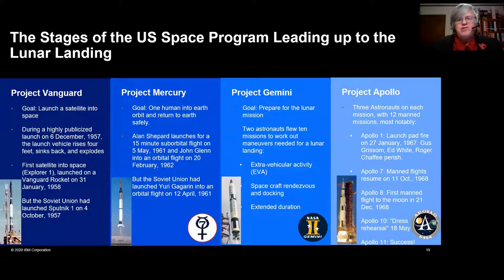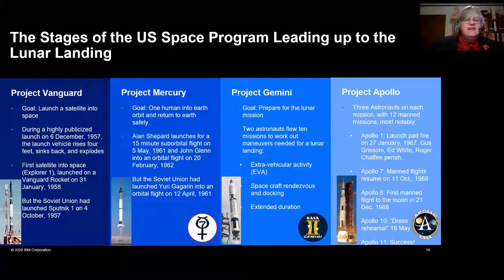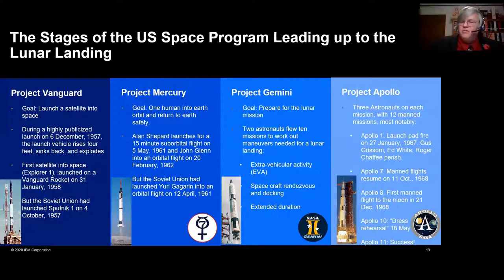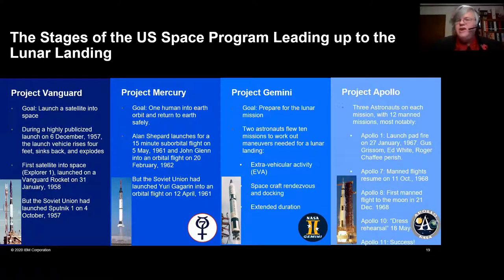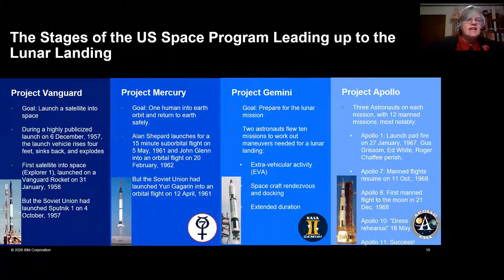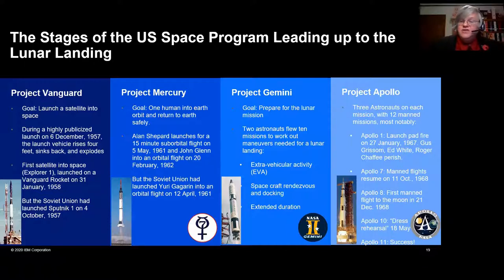The stages of the U.S. space program leading up to this point: the first was Project Vanguard, with the simple goal of launching a satellite into space. The very first highly publicized liftoff in late 1957 — one of these Vanguard rockets rises majestically four or five feet off the launch pad, wobbles, falls over and explodes. What a humiliating experience — the videos are out on YouTube. But we did manage to launch a satellite successfully off a Vanguard rocket a month later in January 1958. The Soviet Union had already been there, so we got to the party a little bit late.